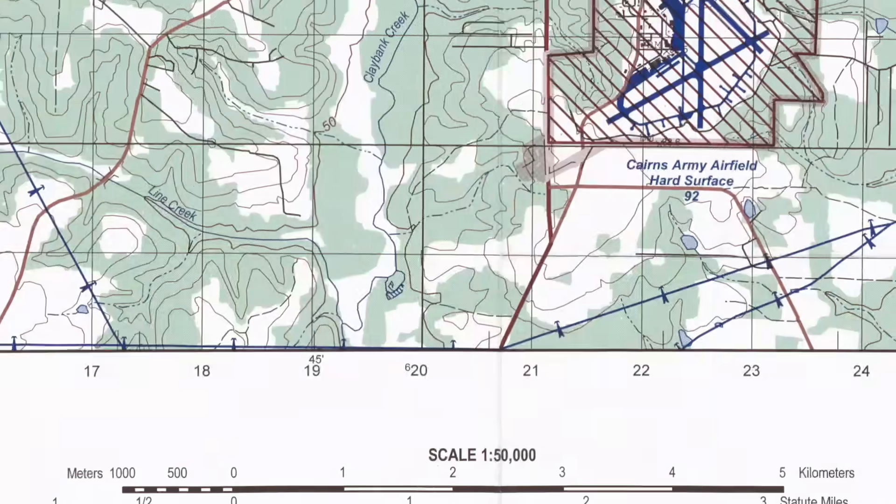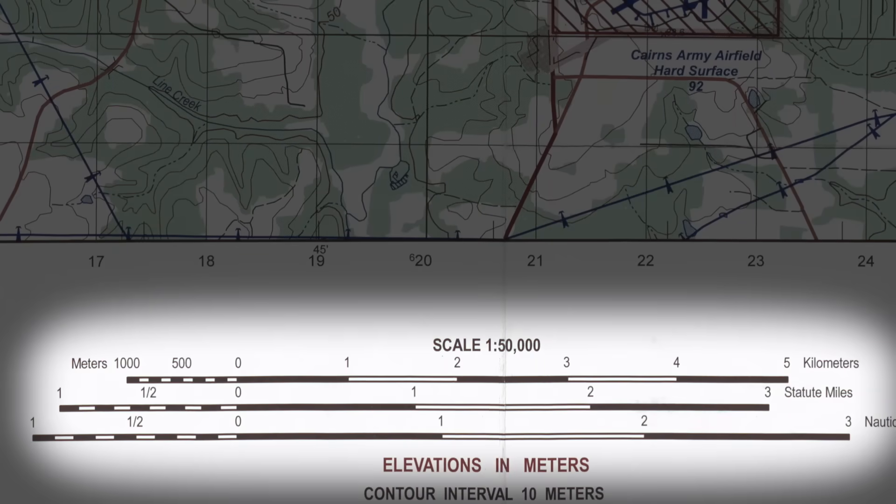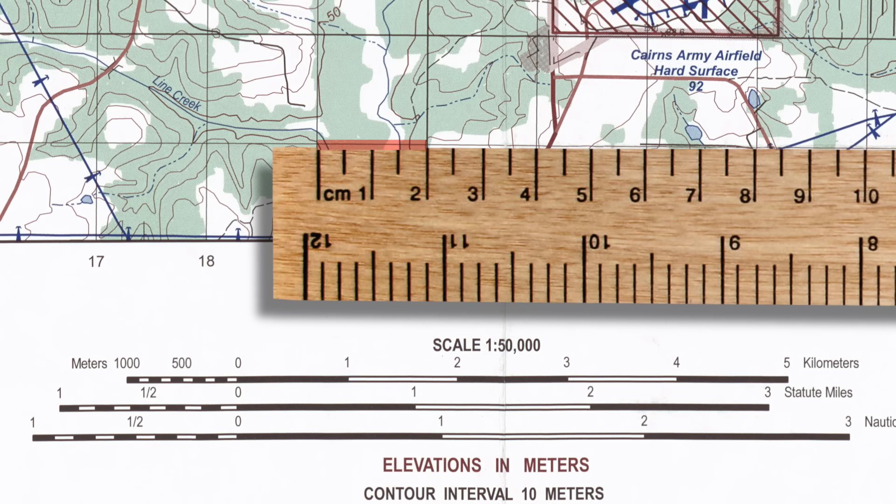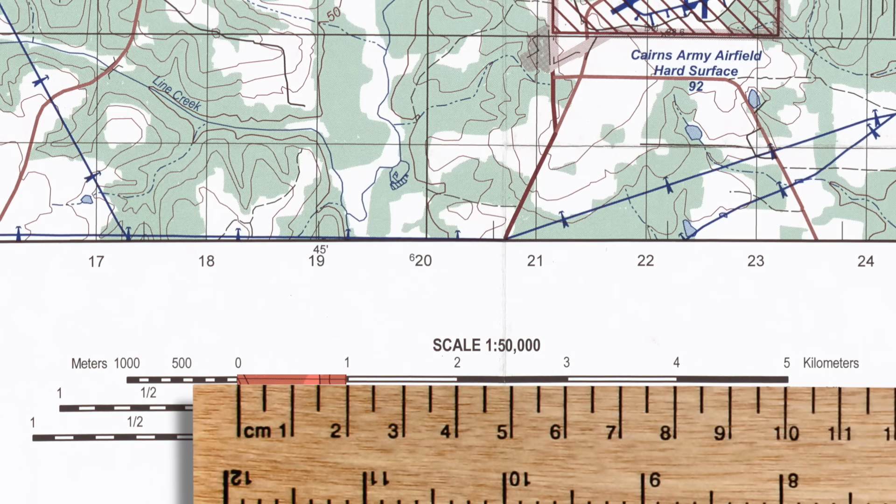Now, the map's bar scale will tell us how to convert from the distances on the map to actual distances on the earth. For instance, two centimeters on the map corresponds to one kilometer on the ground.